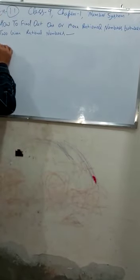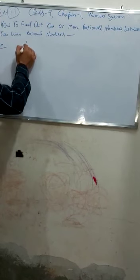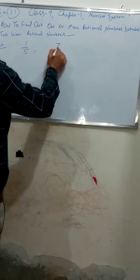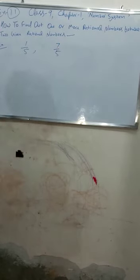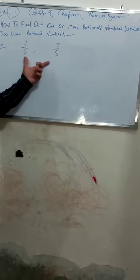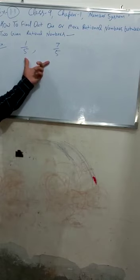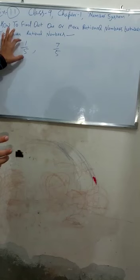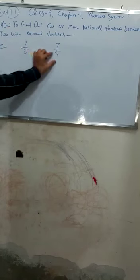Now suppose we take another example. The numbers given are 1 by 5 and 7 by 5 — numbers given in fractional form. Whenever numbers are given in fractional form, we will first check whether their denominators are the same or not. We can see here their denominators are already the same: 1 upon 5 and 7 upon 5.